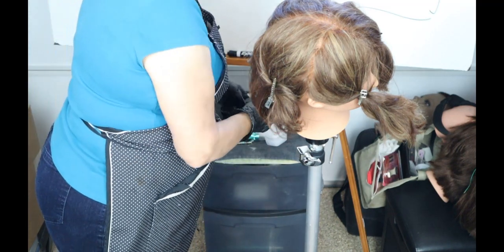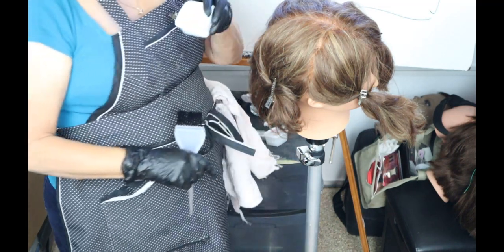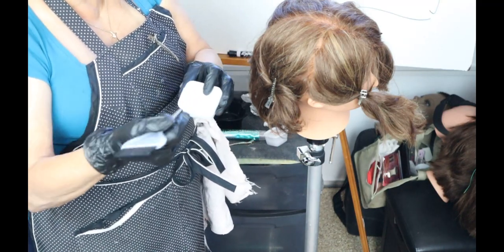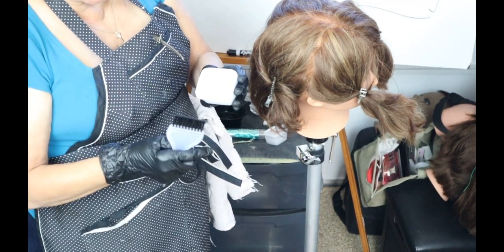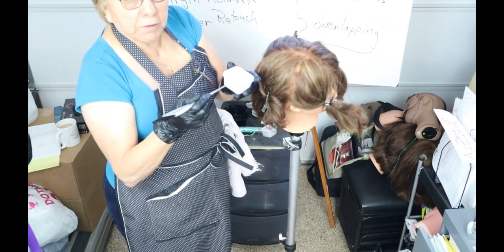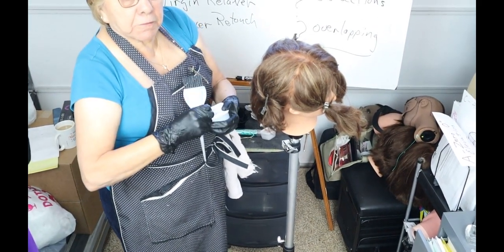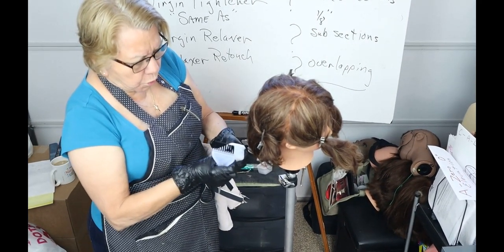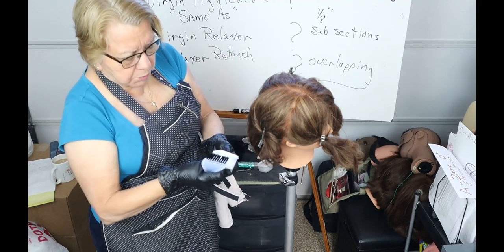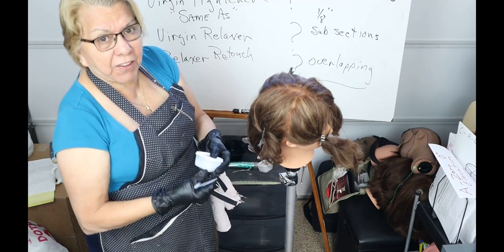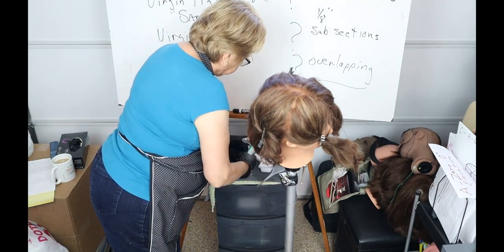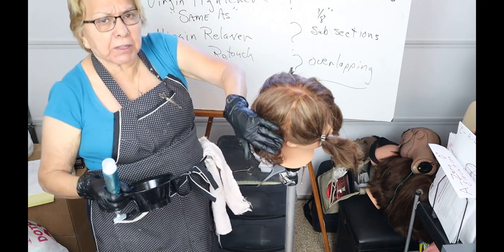I've got two ounces of 20 volume developer and two ounces of color, which will make four ounces in the bowl. You always want to put your color in first because the color comes out like spaghetti strings. I'm going with a virgin lightener procedure, though this tube is actually a very light color, not bleach.